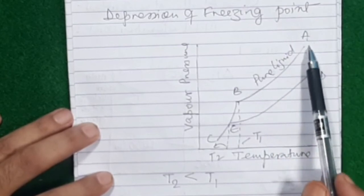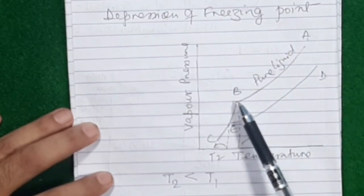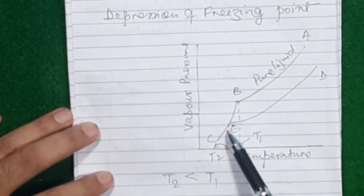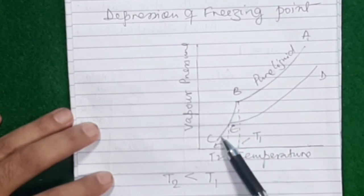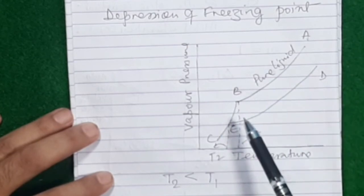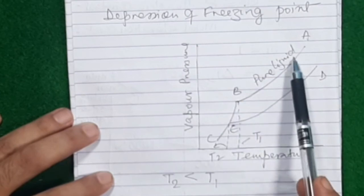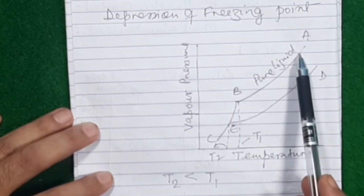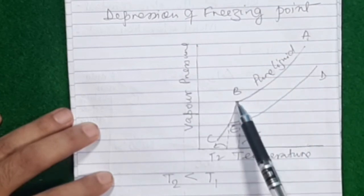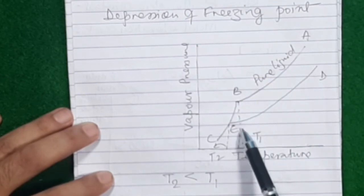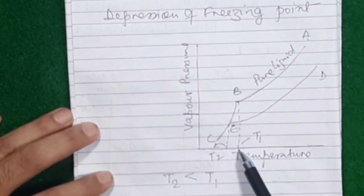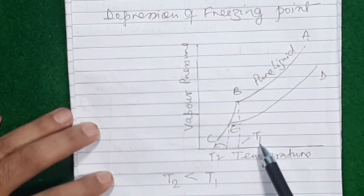Why does the vapor pressure-temperature curve of a pure liquid suddenly bend when you keep cooling it? It is because when you constantly cool a liquid, it reaches a point where it freezes. After reaching temperature T1, this liquid freezes and becomes solid, and the solid has a different slope for its vapor pressure-temperature curve — that's where the curve bends.